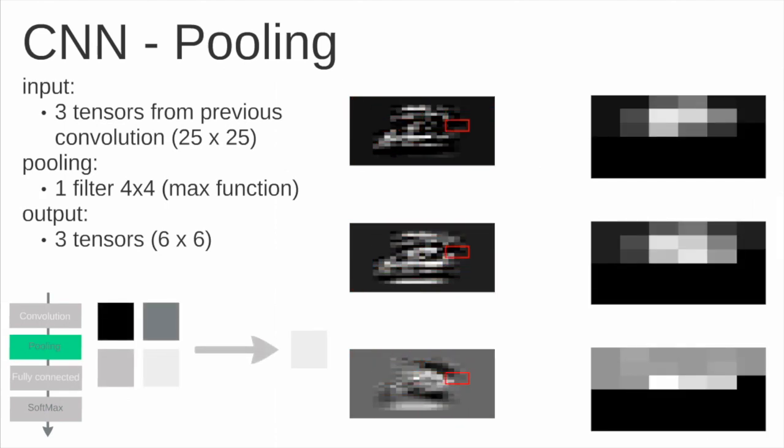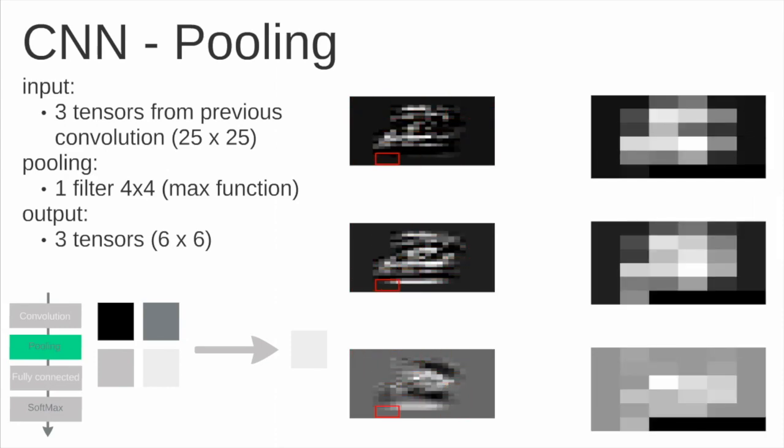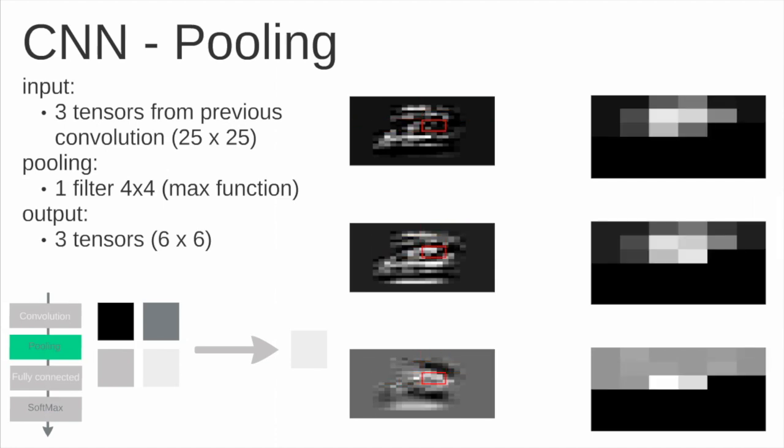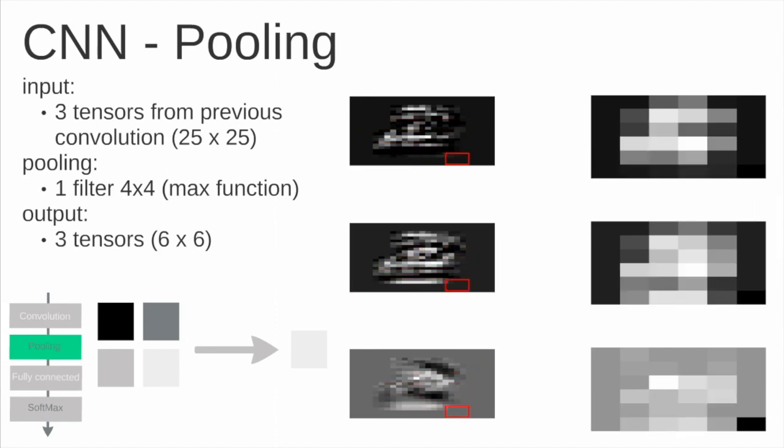The next layer is what we call pooling operation, that integrates some values and the output will be a single value. For example here we have four pixels, and the function that we applied here is to get the four pixels and obtain the maximum of these four pixels. So we obtain a single value.